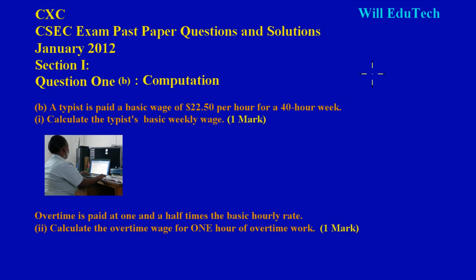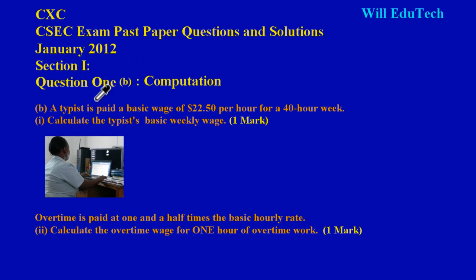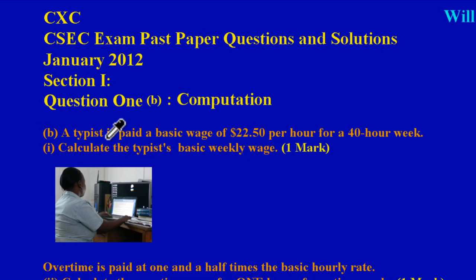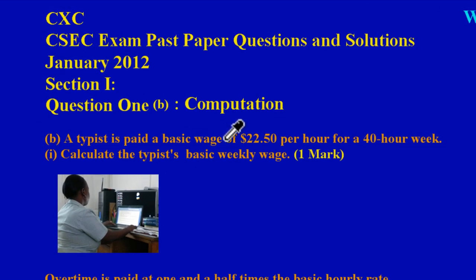Welcome back my friends, here on Will Edu Tech. This is another edition in our CSEC Math exam past paper questions and solutions. This question was taken from the January 2012 paper, it's question 1 part B. The question states: A typist is paid a basic wage of $22.50 per hour for a 40-hour workweek. Part 1 asks us to calculate the typist's basic weekly wage - that's an easy one mark.